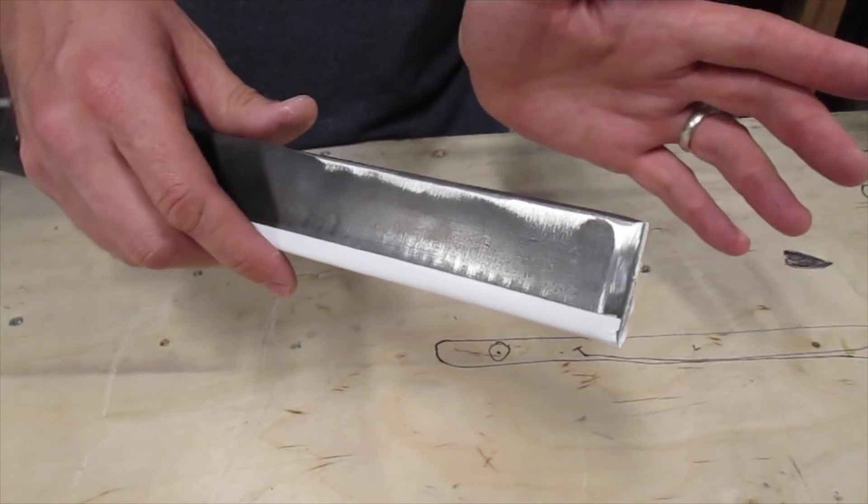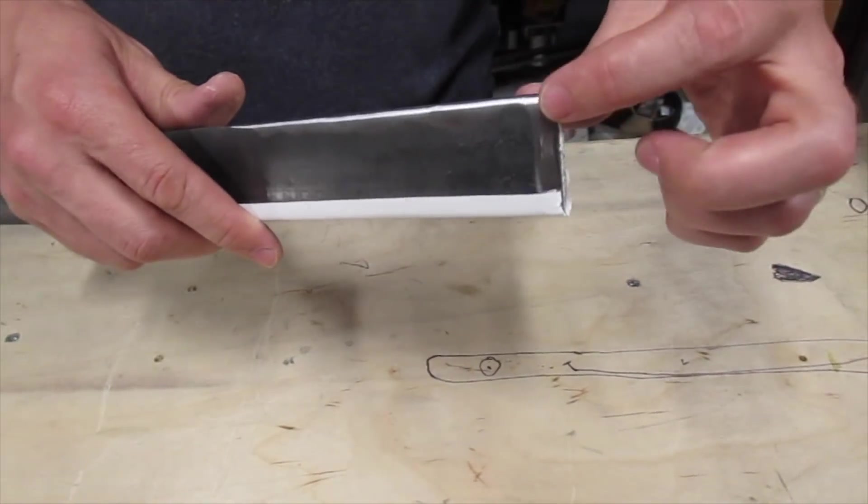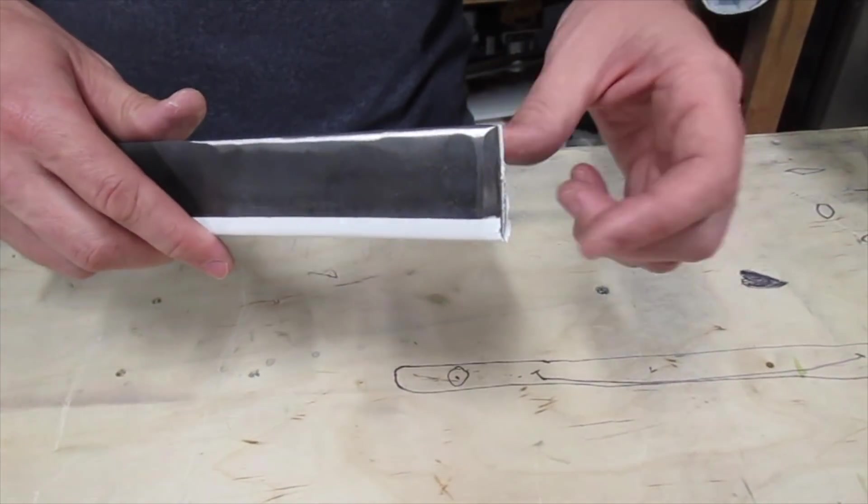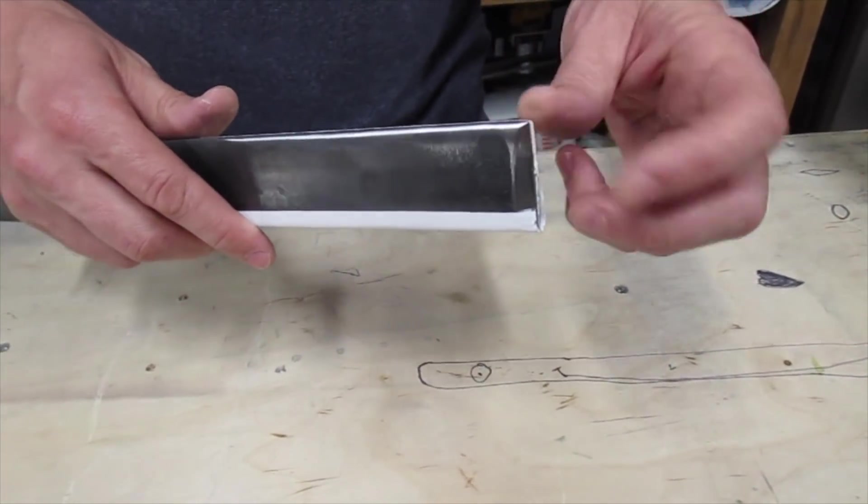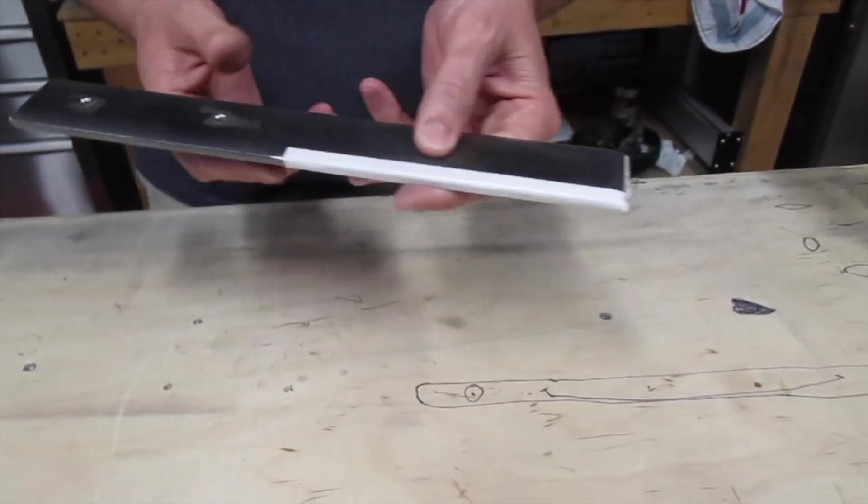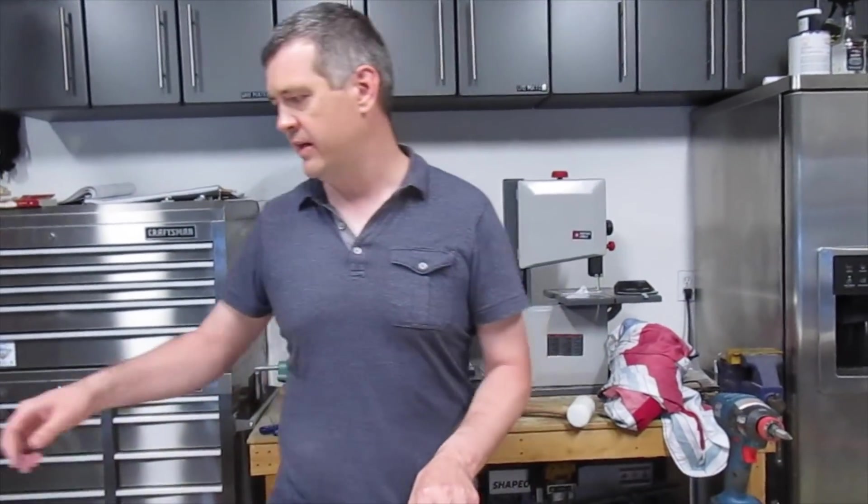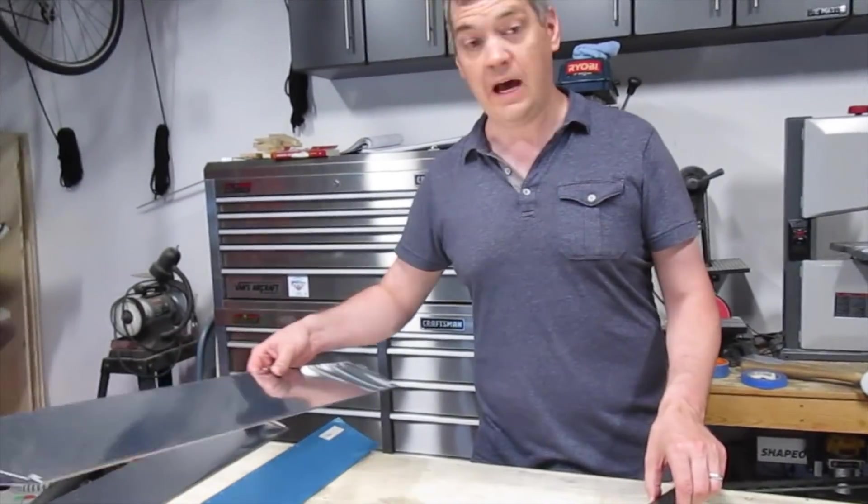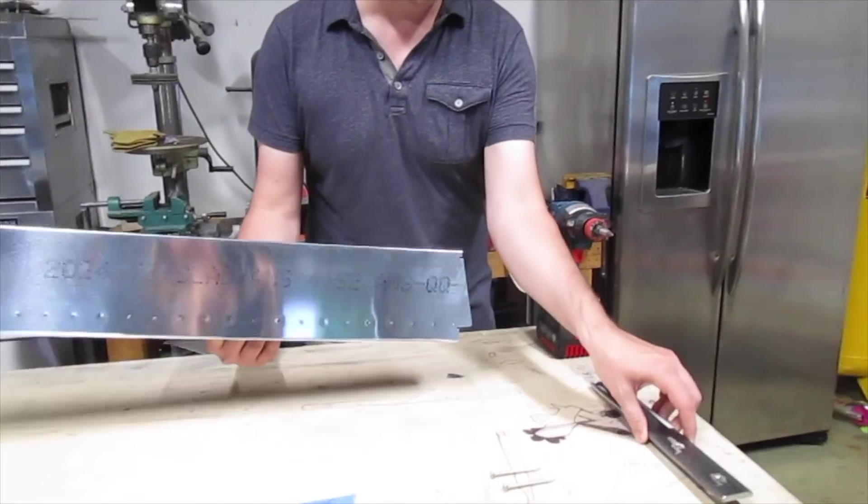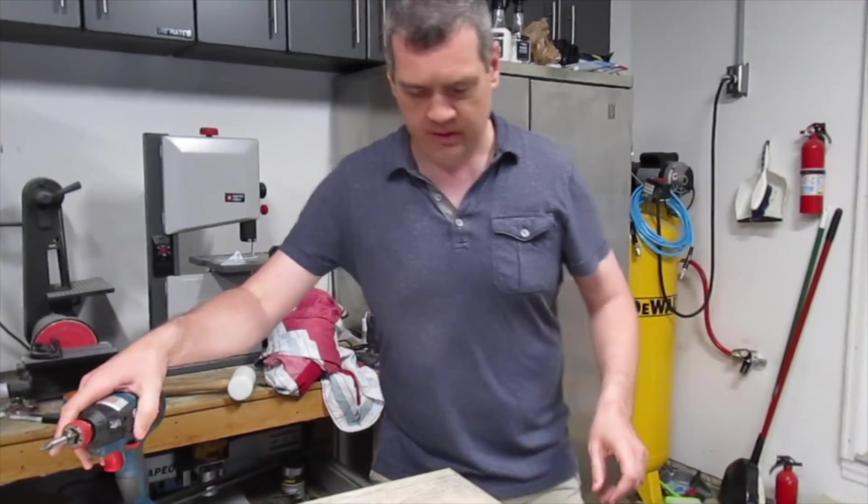And this taper is so it can get into the actual far aft end of the trim tab because it's already been bent on the makeshift bending brake. OK, so enough talk. Let's show you how this actually goes together here and see if we can not mess up another trim tab. We're gonna do this live here.